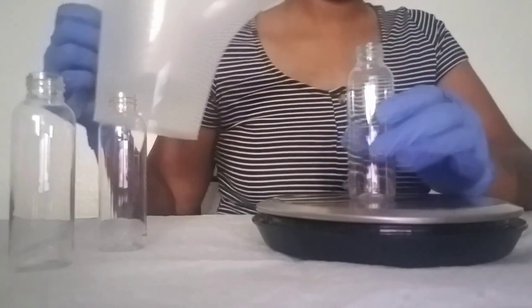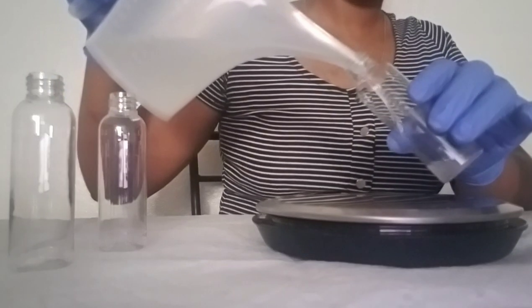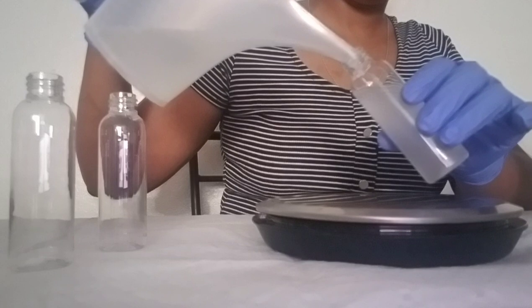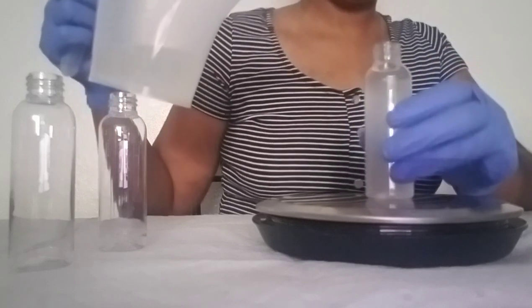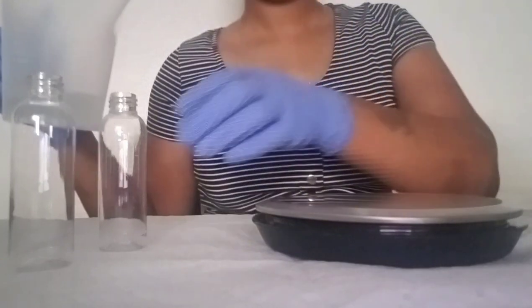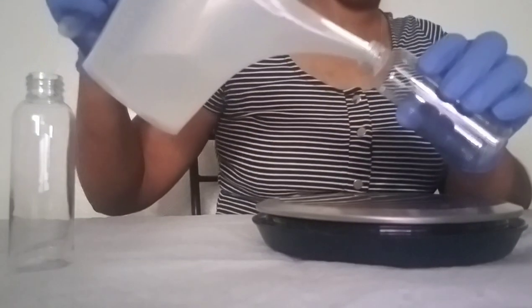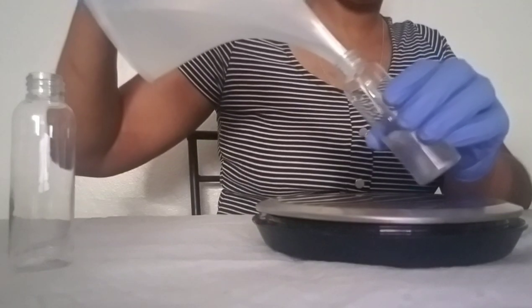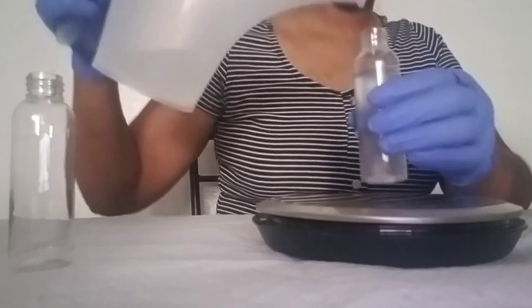I always put the bottle on first and then tare it out so the scale doesn't count the weight of the bottle as part of the 2 ounces. Because I really want 2 ounces of fluid to be counted—I don't want the bottle weight included.